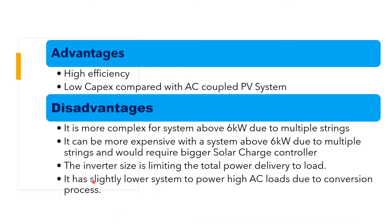The general advantages and disadvantages of a DC coupled PV solar system: Advantages — high efficiency, low CapEx (capital expenses) compared with an AC coupled PV solar system. CapEx is the initial cost. Disadvantages — it is more complex for systems above 6 kW due to multiple strings, and it can be more expensive for systems above 6 kW due to multiple strings requiring a bigger solar charge controller.